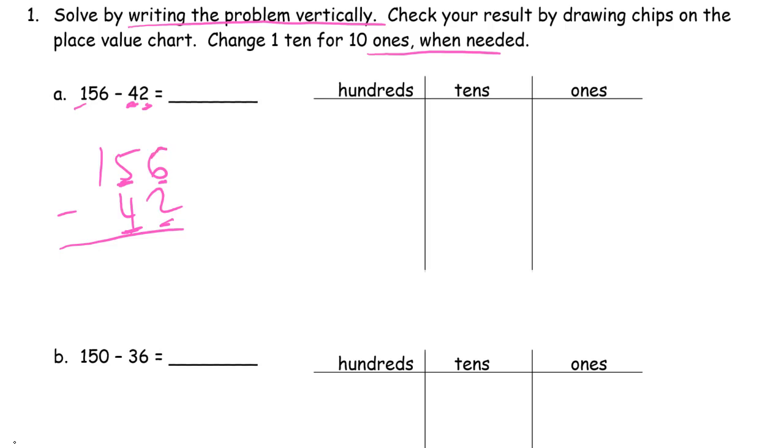Alright, and now vertically we can see we have enough ones. Six, we can take away two ones and have four left. And tens, we have five tens. We can take away four tens and have one left. And there's our answer, 114. Sometimes it's that easy.